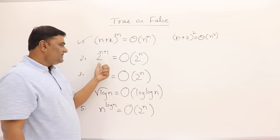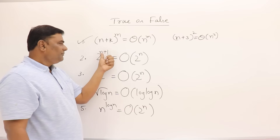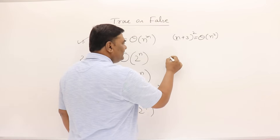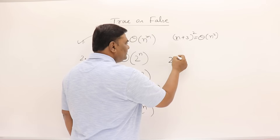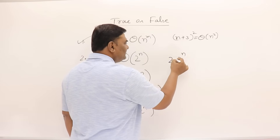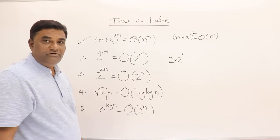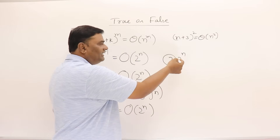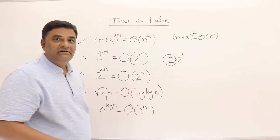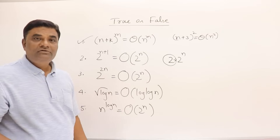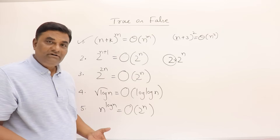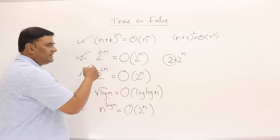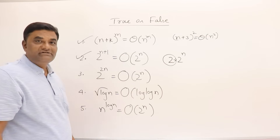Next: 2^(n+1) = O(2^n). We have 2^(n+1) = 2 · 2^n. The coefficient 2 is ignorable, so this is Θ(2^n), and therefore also O(2^n) and Ω(2^n). This statement is correct.